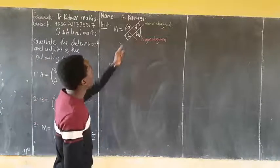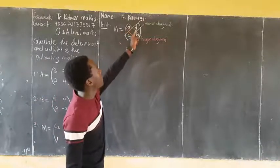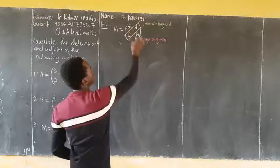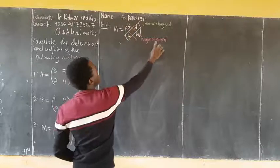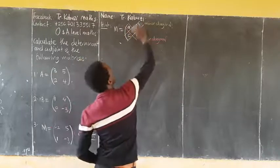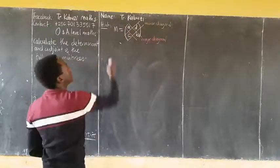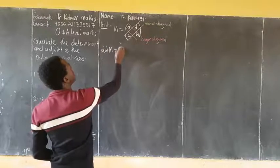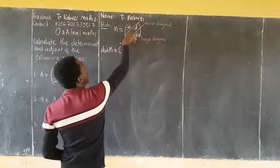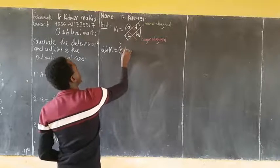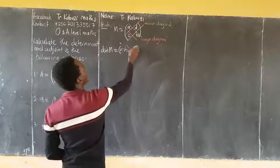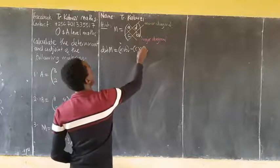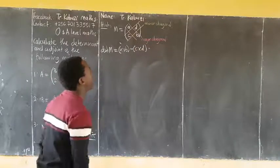A matrix M given by these entries A, B, C, D, we divide it into two diagonals. This one is called the major diagonal and this one is called the minor diagonal. The determinant of M is always given by the product of elements in the major diagonal minus the product of elements in the minor diagonal, A times D minus C times B.